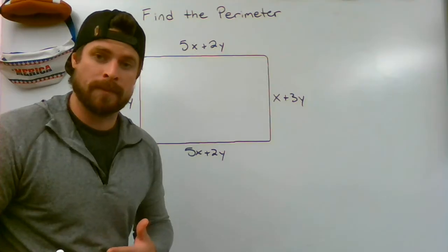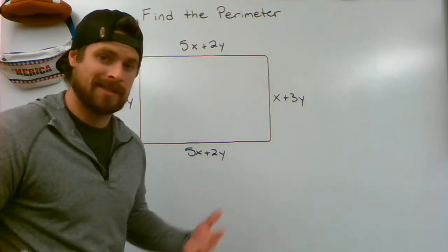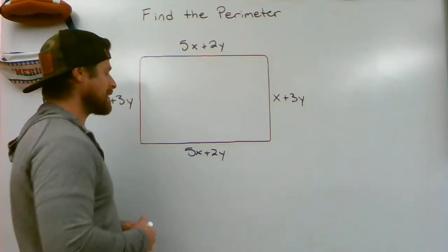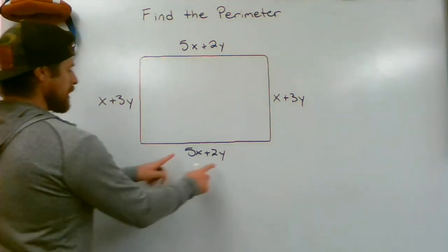Just like you would find the perimeter of any rectangle given numbers, you're adding all the sides together. So what we're going to do here is take this side of 5x plus 2y.